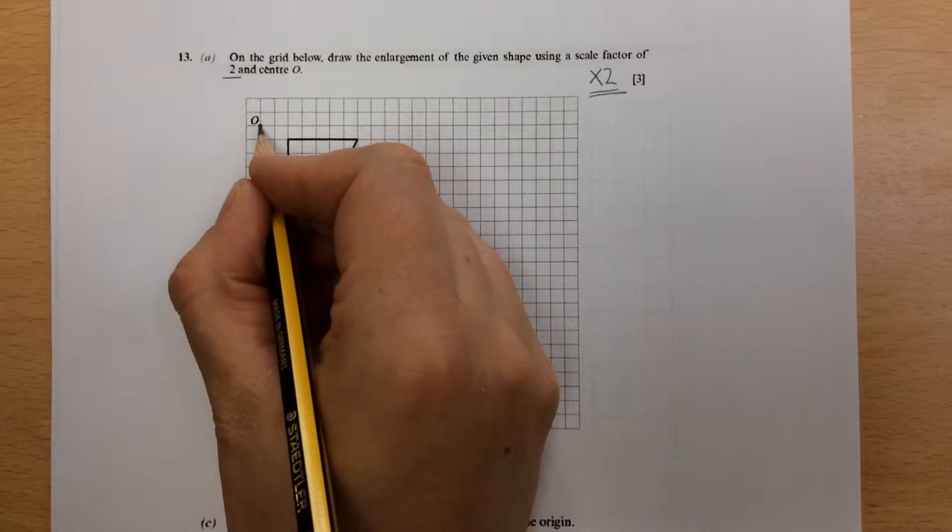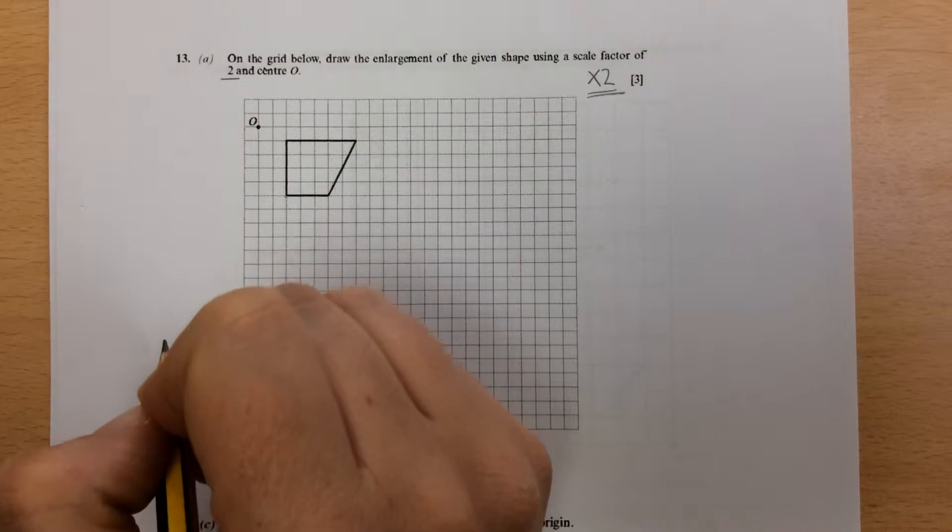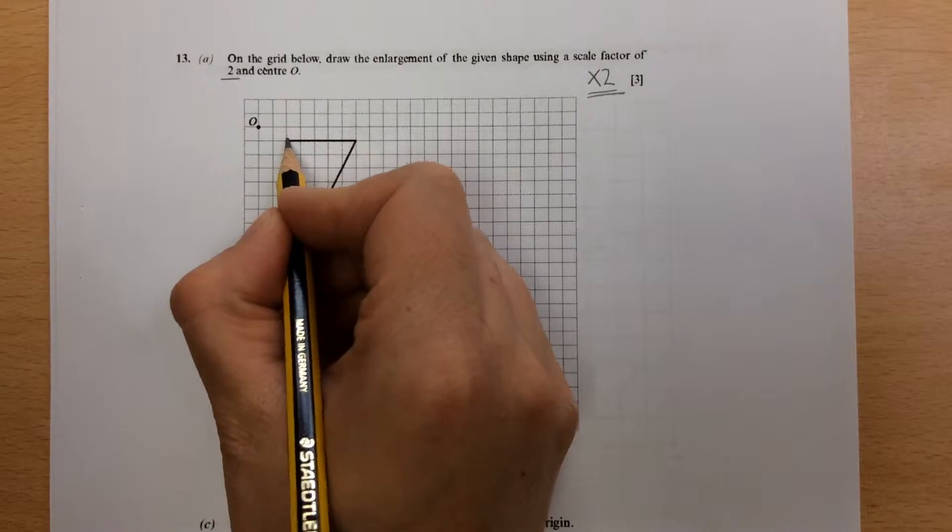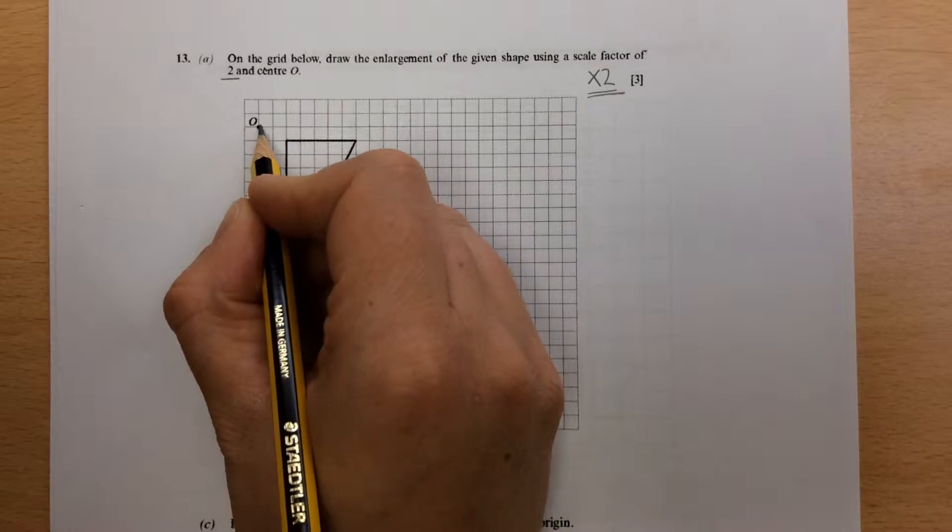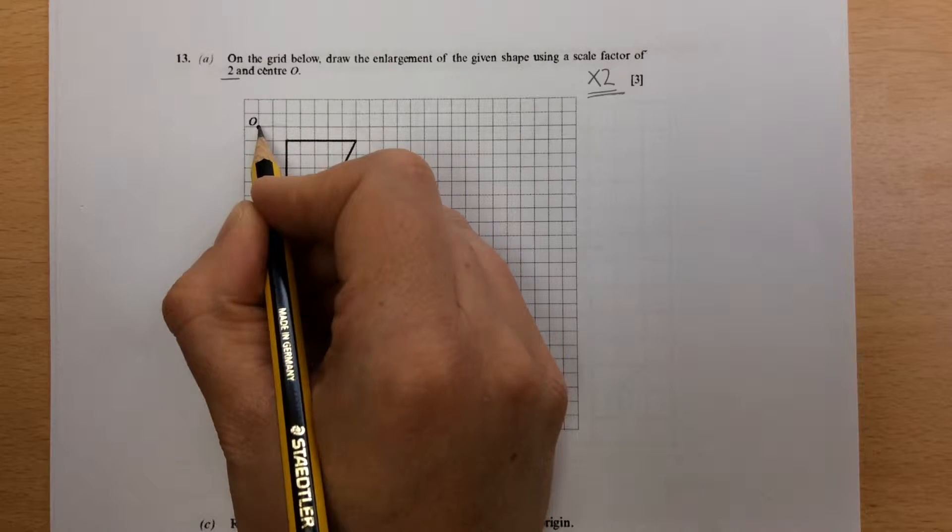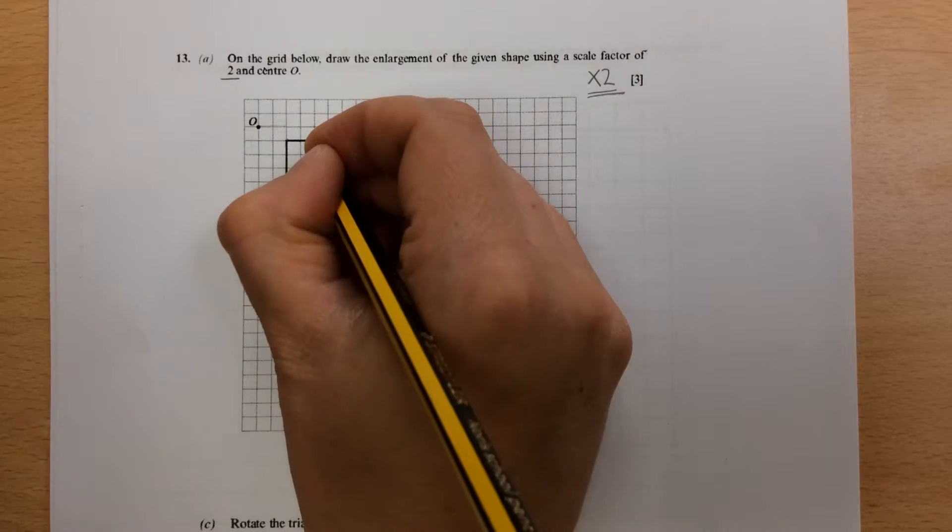The O is the center of enlargement. Each one of these points on the diagram needs to increase by 2 from the O. So this point here, if we take the first one, is 2 across and 1 down. Now it's going to be doubled. So 2 across is going to be 4 across, and 1 down is going to be 2 down.